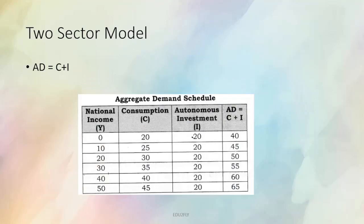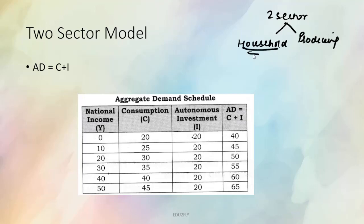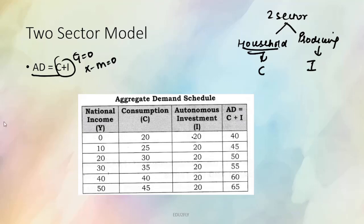Next hum dekhte hai two sector model. Circular flow mein humne kaafi saare models dekhe the — two sector model, three sector model, four sector model. Yahaan pe for the convenience, taa ki itna zyaada complex na ho situation, hum two sector model le rahe hai. Two sector model mein sirf do hi sectors aate hai — household and the producing sector. Household ka component tha C (consumption expenditure), producing sector ka tha I (investment expenditure). Here hum G nahi le rahe — G zero le rahe hai, X minus M bhi nahi le rahe. Toh bacha kya humare paas — C + I only.